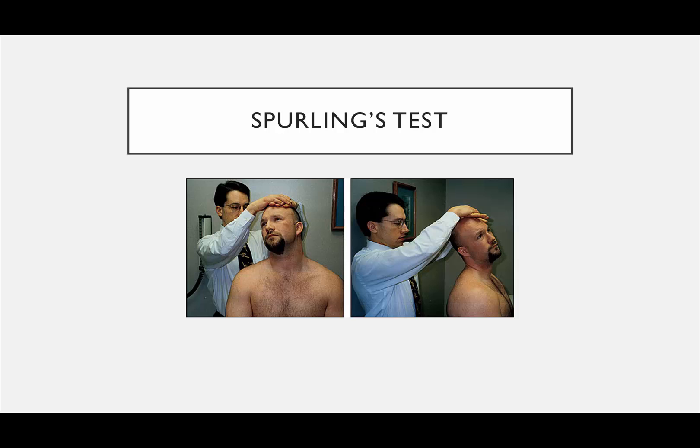Spurling's test is a test for radiculopathy and nerve root irritation. You extend the spine, create lateral rotation, and then compress downward — essentially creating foraminal stenosis to provoke nerve root irritation. A positive test reproduces radiculopathy symptoms such as a shooting pain radiating down the arm.